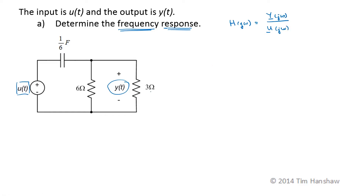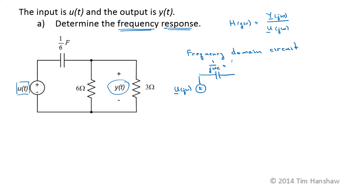This means we're going to need a frequency domain circuit, so let's convert the circuit to the frequency domain. The input is still a voltage source with voltage U, a phasor as a function of omega. The impedance of the capacitor is 1 over J omega C, which is 1 over J omega times 1/6, which is 6 over J omega. Remember that omega is staying as our independent variable. The 3-ohm and the 6-ohm resistor are in parallel; they can be combined to an equivalent 2-ohm resistance. And our output is the voltage phasor Y as a function of omega across that combination of resistances.